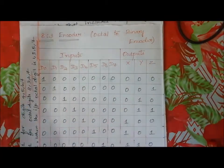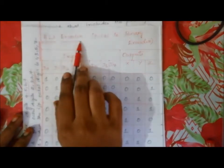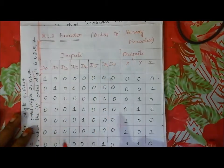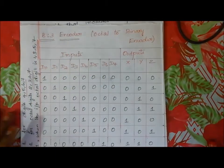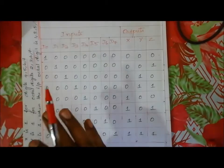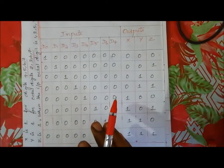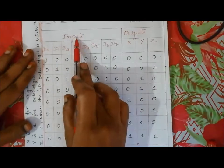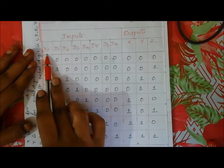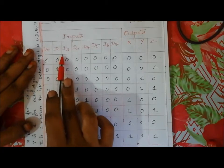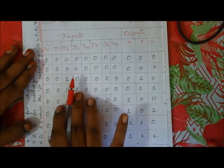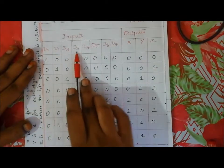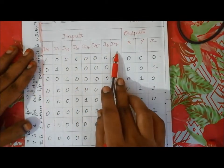The 8-to-3 encoder is also called an octal to binary encoder. It is the reverse process of the decoder. The inputs are D0, D1, D2, D3, D4, D5, D6, D7 — 8 input lines — and the outputs are the 3-bit binary lines A, B, C (or X, Y, Z).